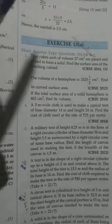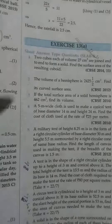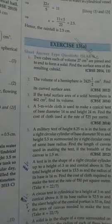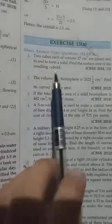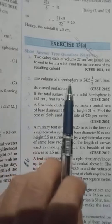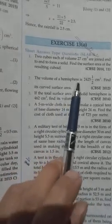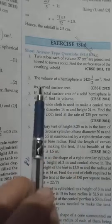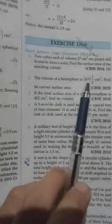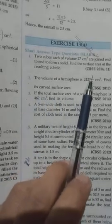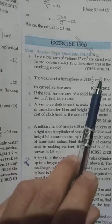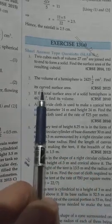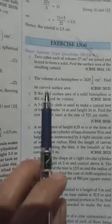Today let us do Exercise 13a, question 2 on mensuration. Here we have the volume of a hemisphere. We have a solid body in the form of a hemisphere. They give us the volume to be 24251/2 cm³. Then we will have to find the curved surface area.